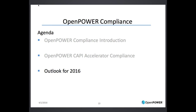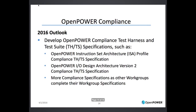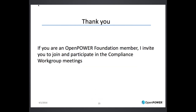Now I will give an outlook of the Compliance Work Group activities for 2016. The work group is planning to develop OpenPower compliance test harness and test suite specifications for other areas, such as the OpenPower Instruction Set Architecture profile compliance and the OpenPower IO Design Architecture version 2 compliance. These will cover the OpenPower ISA profile specification and the IODA version 2 specification, both available on the OpenPower Foundation website today. There will also be more compliance specifications as other work groups complete their work group specifications. If you are an OpenPower Foundation member, I invite you to join and participate in the compliance work group meetings.